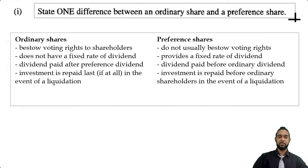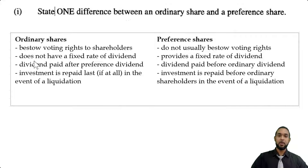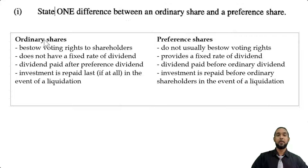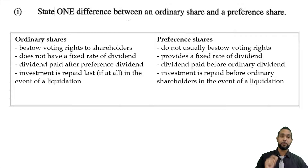Let's start with stating one difference between an ordinary share and a preference share. I'm going to give you more than one. Ordinary shares bestow voting rights to shareholders; preference shares do not usually bestow voting rights. Ordinary shares do not have a fixed rate of dividend, but preference shares provide a fixed rate of dividend. The ordinary share dividend is paid after the preference dividend, whereas preference dividends are paid before ordinary dividends. And in the event of a liquidation, the ordinary share investment is repaid last if at all, whereas for preference shares, the investment is repaid before ordinary shares.